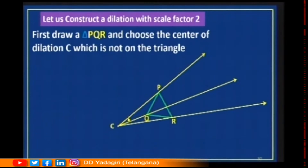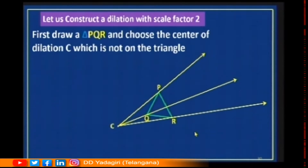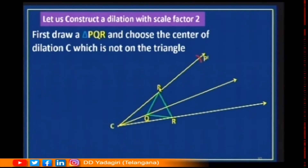I am taking triangle PQR and a point C as the center of dilation. I am drawing three rays from C: passing through P, passing through Q, and passing through R. If you take a quadrilateral, you would draw four rays. The scale factor is two, meaning we enlarge the triangle two times. From C to P, measure the distance, and from C take an arc of twice that distance to cut the ray, so that CP' is twice CP.